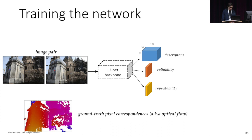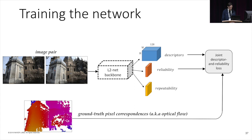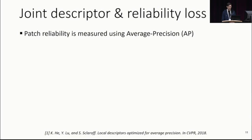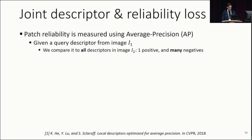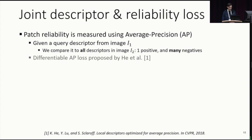Our network is trained from scratch using two different losses. The first one is for learning discriminative descriptors jointly with an estimator of reliability, and the second one for predicting repeatable locations in the image. I will first describe the joint descriptor and reliability loss. We measure reliability by examining the nearest neighbour — more formally, by computing the average precision, or AP. Given a patch from the first image, we compare its similarity to all patches from the second image — one positive and many negatives. We directly optimize the AP to train the descriptor based on the differentiable AP loss proposed by Hay and colleagues.